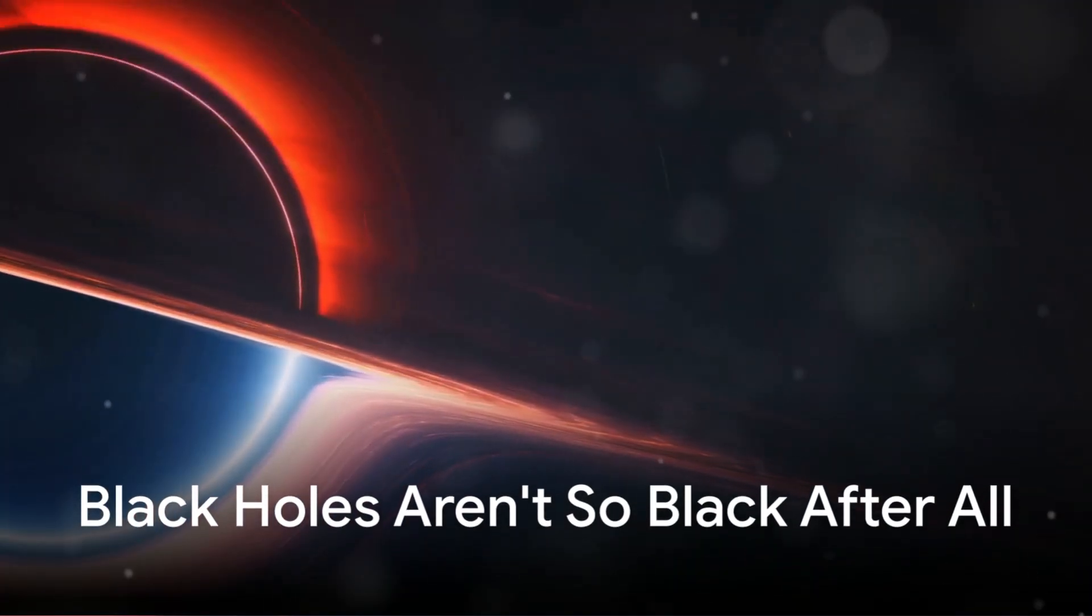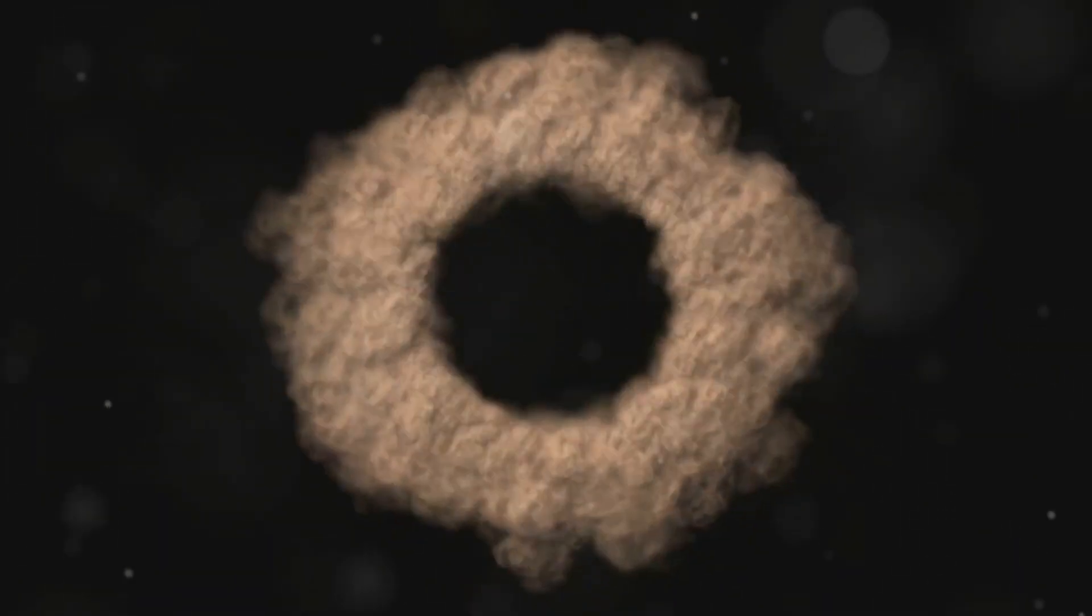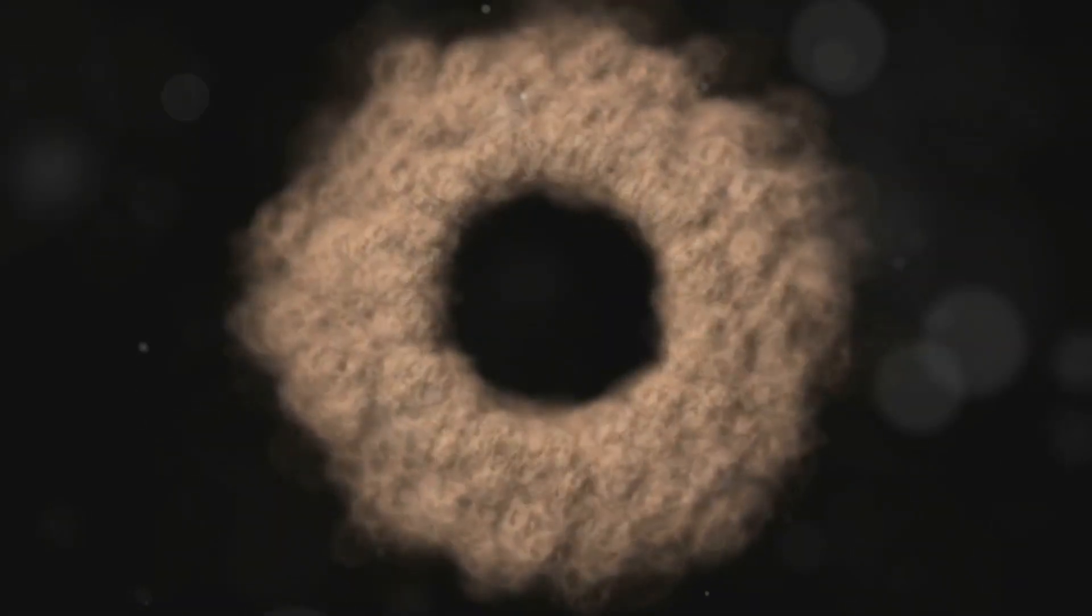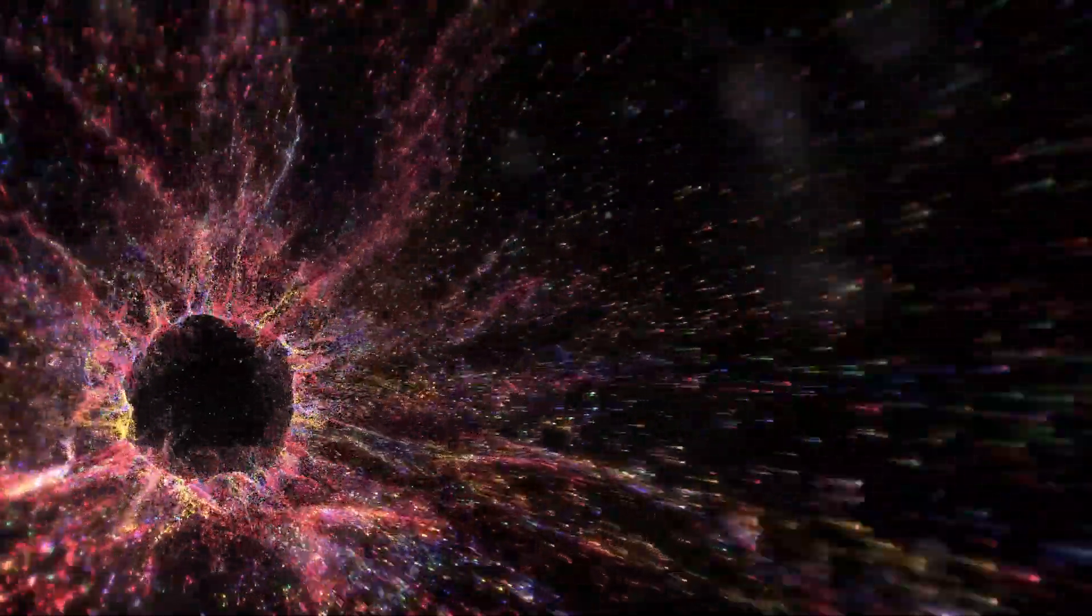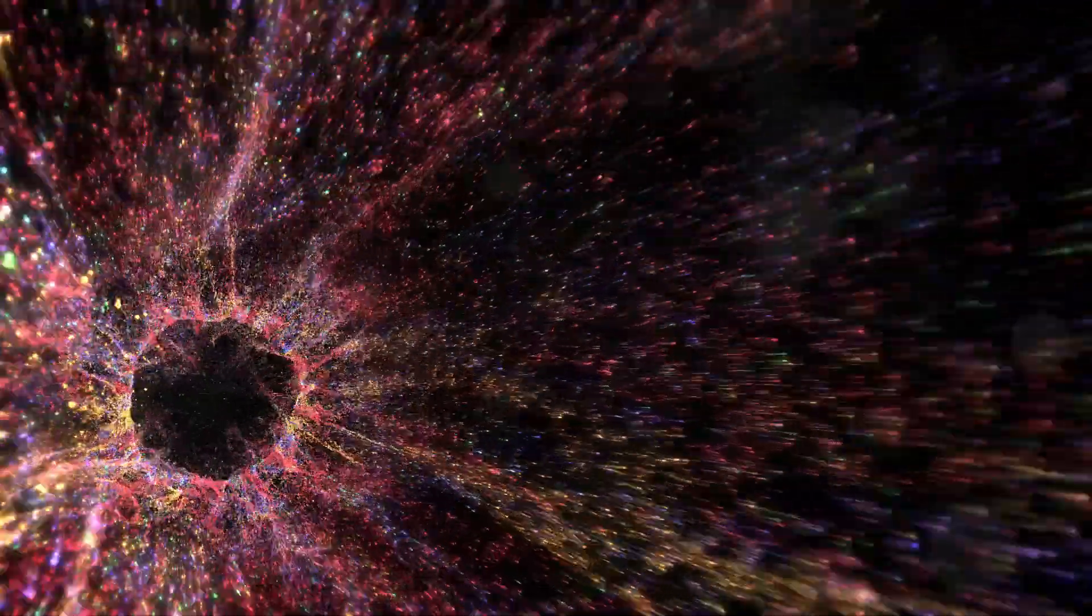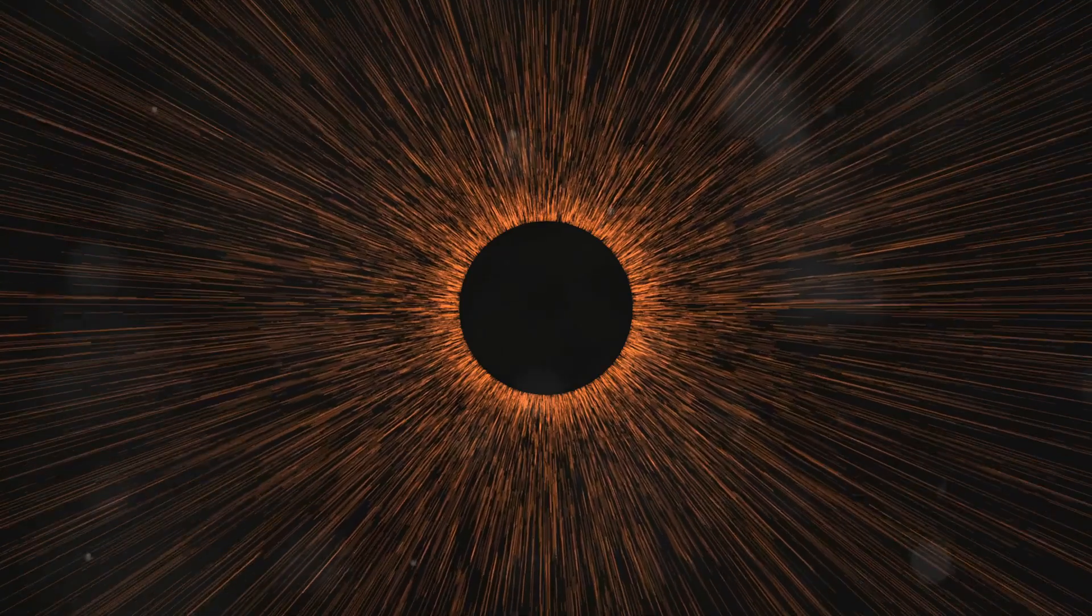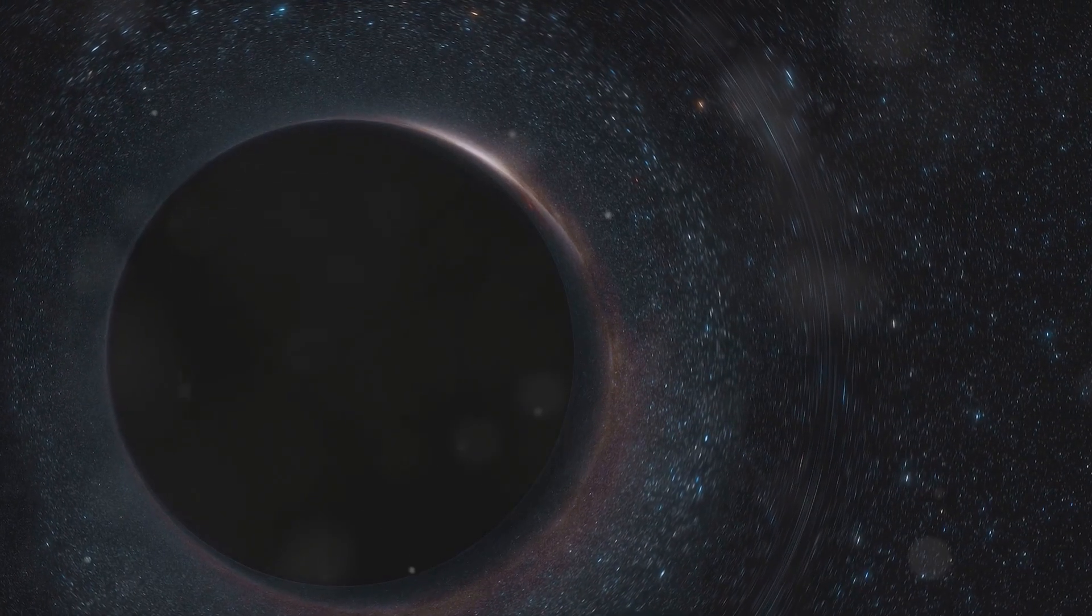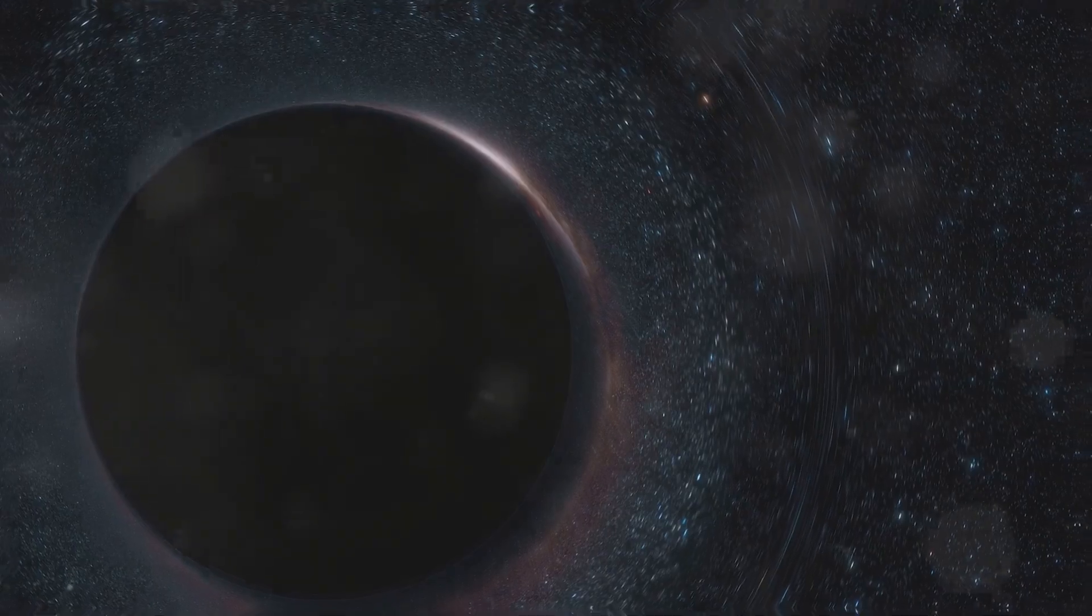Now let's bring a black hole into this quantum dance floor. When a virtual particle pair pops into existence near the event horizon of a black hole, something extraordinary can happen. Sometimes one particle might get trapped inside the event horizon, while its partner manages to escape into the vast expanse of space. The particle that escapes becomes real, carrying away a tiny bit of the black hole's energy. This continuous process of particle creation and escape is what we call Hawking radiation. This discovery was revolutionary because it showed that black holes aren't completely black after all.